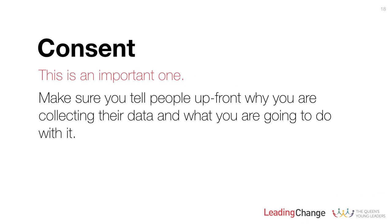We're quite close to the end now, and that brings us to the concept of consent — a really important aspect of collecting and using personal information. The golden rule is: you need to tell people upfront what you're going to do with their data and make sure they're comfortable with it. If you're going to put them on your mailing list, they need to be happy with that. Likewise, if you want to use their telephone number to call them, they need to be happy receiving calls from you. The golden rule is simply to tell people upfront why you're collecting their data and what you're going to do with it.